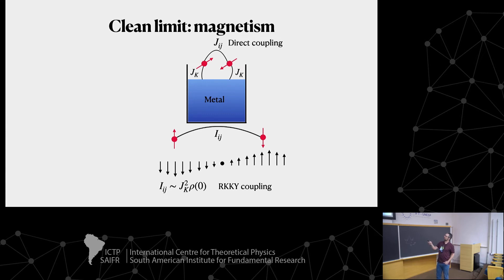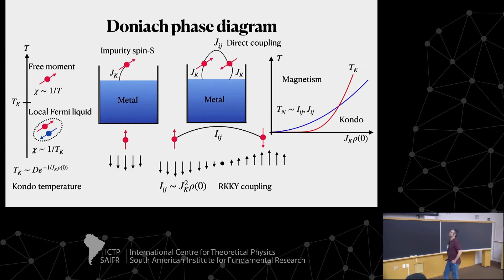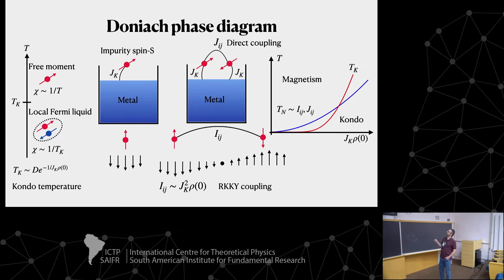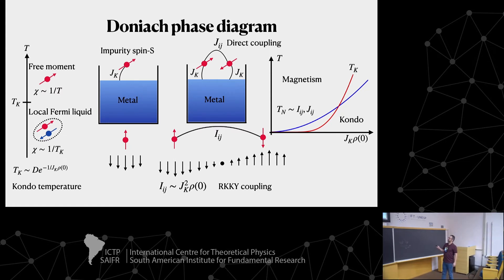With two impurities, you still have the Kondo effect on each one, plus the direct coupling J_AB between them, and also an indirect RKKY coupling via the metal. Looking at a Doniach-like phase diagram: if J_K is small, the Kondo effect won't take place and you have a magnetic phase; if you increase J_K, you go into the Kondo regime. This is the Kondo versus random-singlet dichotomy I alluded to — the temperature scale for magnetism is set by J and the Kondo temperature scale is shown as competition.